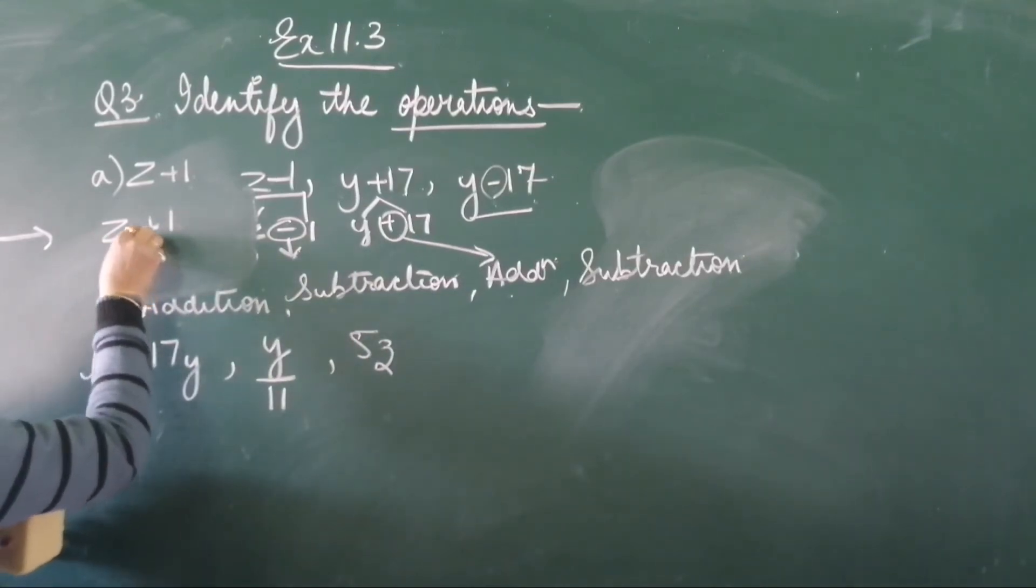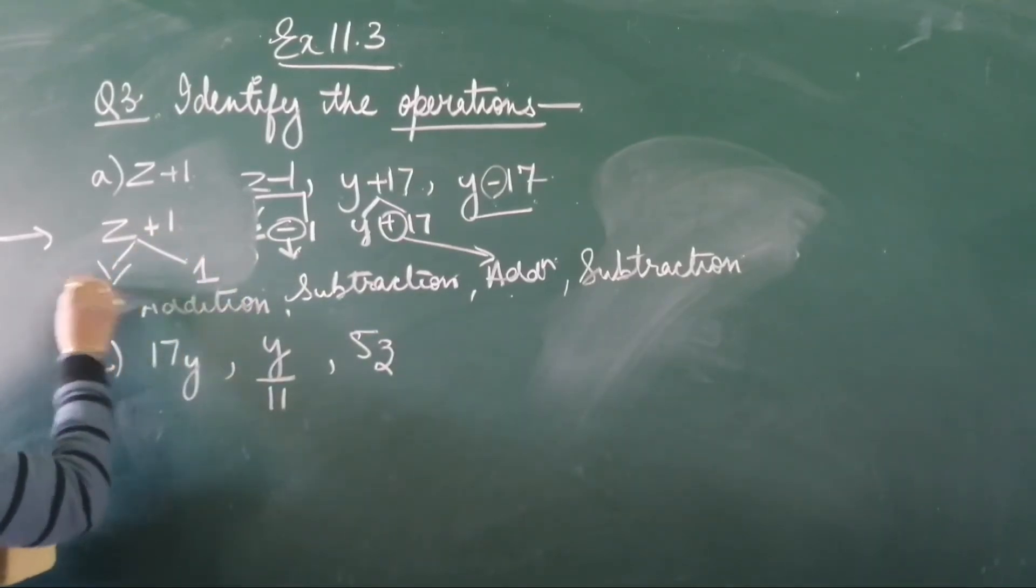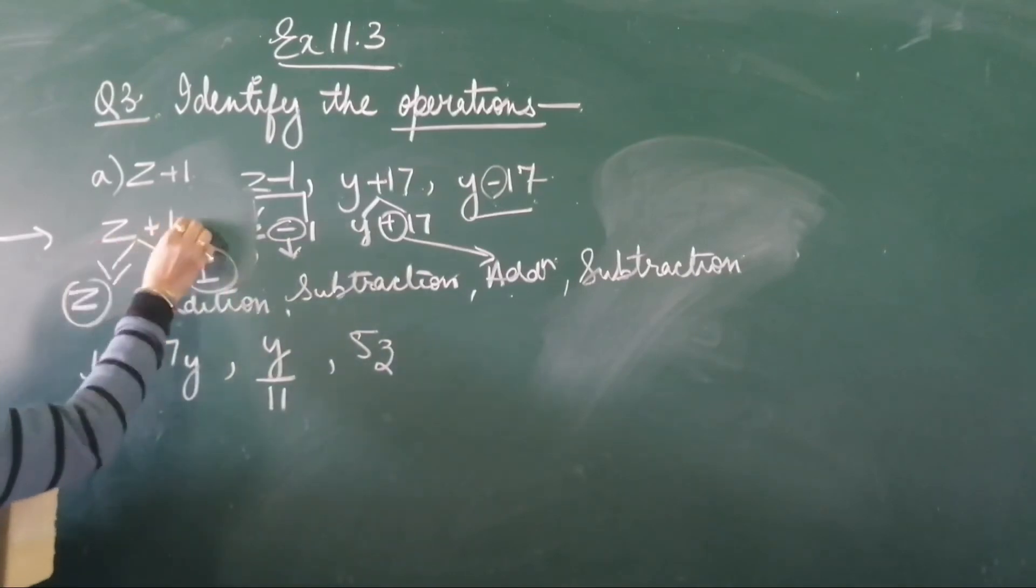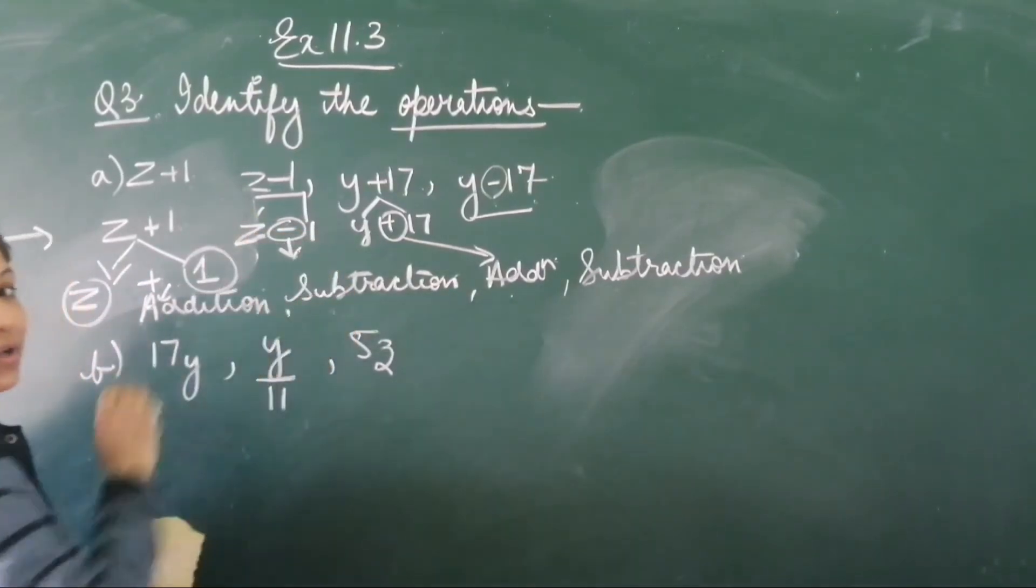Write z plus 1. Then, the two terms here are - we just make a tree structure. These two terms: z and 1. z and 1. And these two we are adding. So for adding, it is addition. This is a symbol, plus sign. See, it is a sign. Plus sign is used for addition. This is a minus sign used for subtraction.